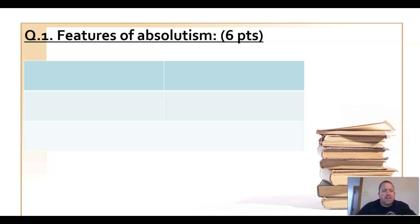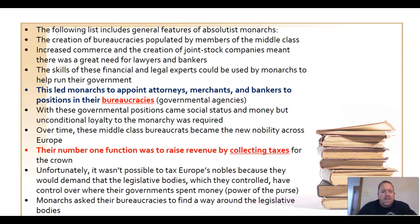Let's look at the features of absolutism. First, absolute monarchs have bureaucracies — governmental agencies that help them run the state. Previously they were very dependent on the nobility, who would work within governmental agencies for the king. But starting around the 1500s that began to change. Kings began to appoint bureaucrats from the middle class — attorneys, merchants, and bankers. Their primary function was to raise revenue through tax collection, which was critical because they needed to fund standing armies.